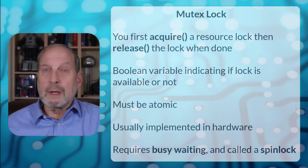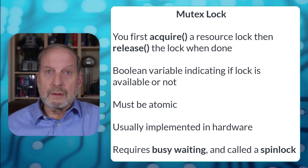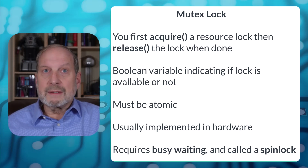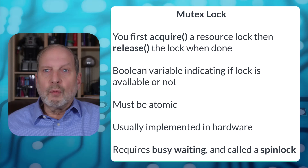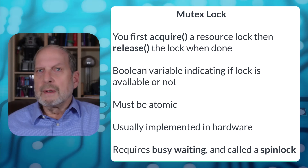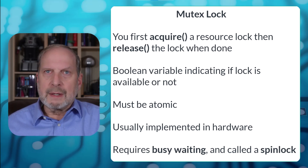The first is a mutex lock, or a mutual exclusion lock. Just as the name says, it only allows one process to use a resource at a time.